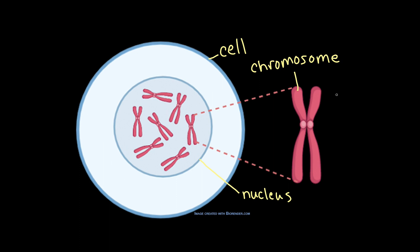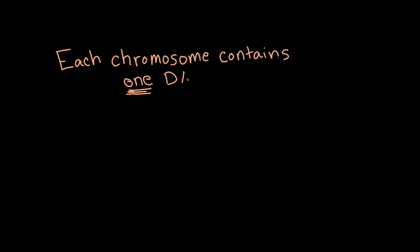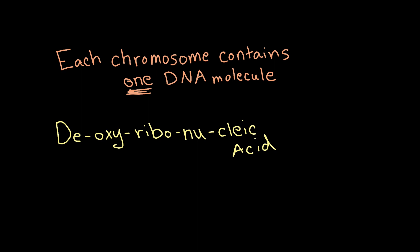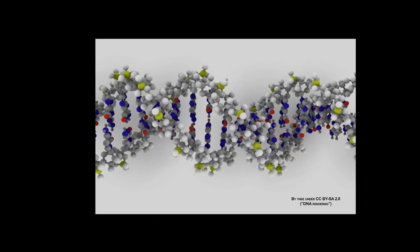Chromosomes are often shown as X-shaped structures, like this one. Each chromosome is a structure that contains one long molecule of DNA, which stands for deoxyribonucleic acid. All right, sing it with me — deoxyribonucleic acid, or DNA for short. Here's a model showing a small stretch of a DNA molecule. You can see that it's made up of lots of different atoms, represented by these colored balls. The DNA molecule in a chromosome is like this, but much, much longer.